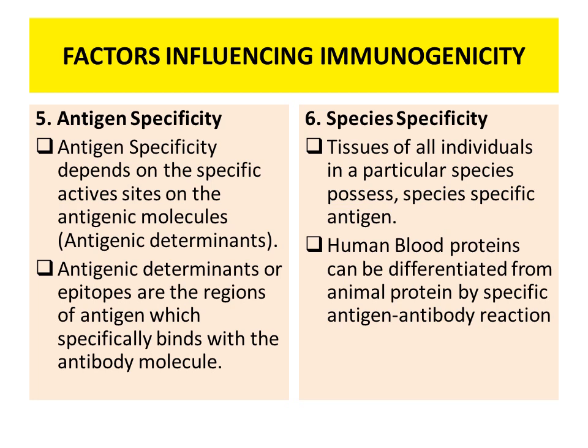Next is species specificity. Tissues of all individuals in a particular species possess specific antigens. Human blood proteins can be differentiated from animal proteins by specific antigen-antibody reactions.